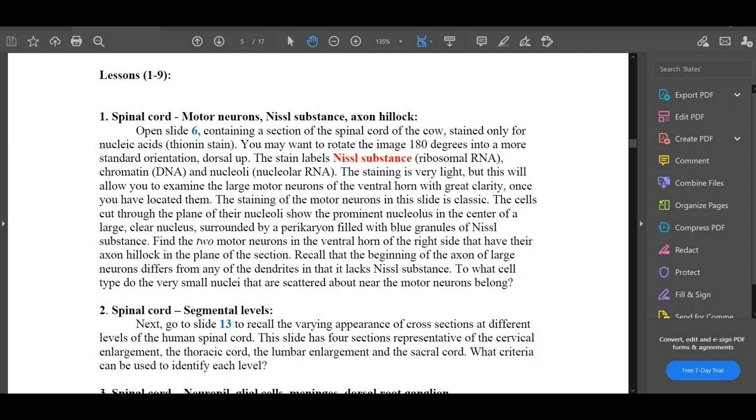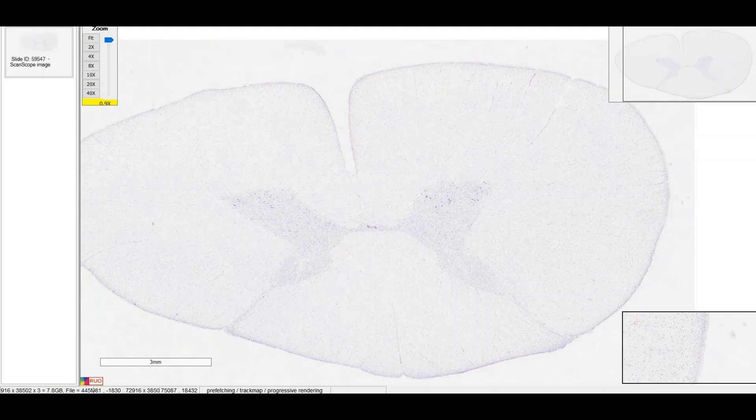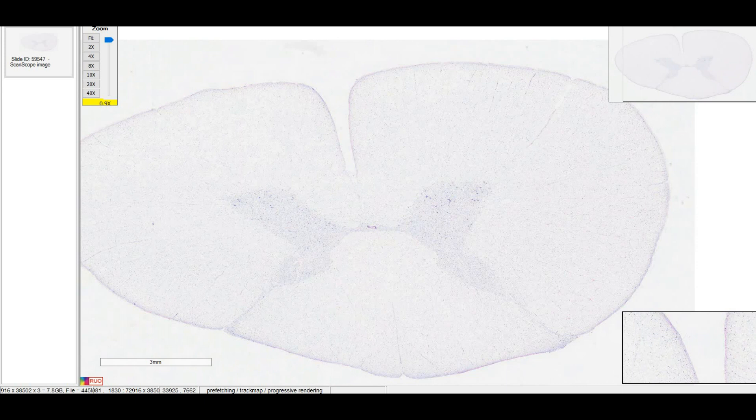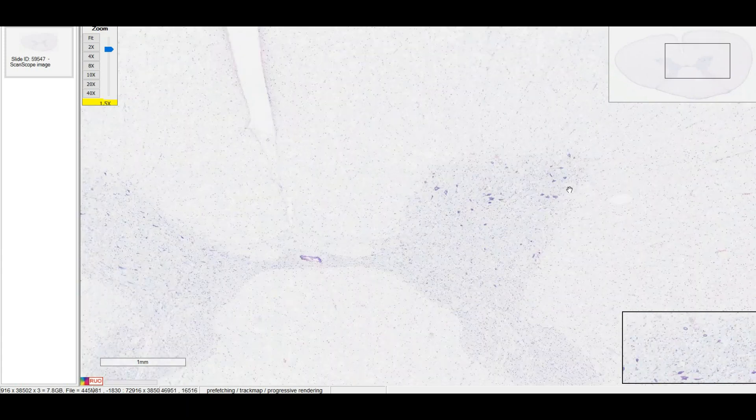First up, we have a cow's spinal cord stained with thionine, which is picked up by nucleic acids. Here's the slide itself. We're going to zoom in over here to the ventral horn. Remember that the orientation here is actually flipped from what we're used to seeing. In this slide, dorsal is down here even though normally we see it at the top.